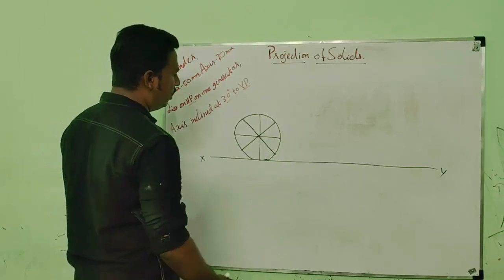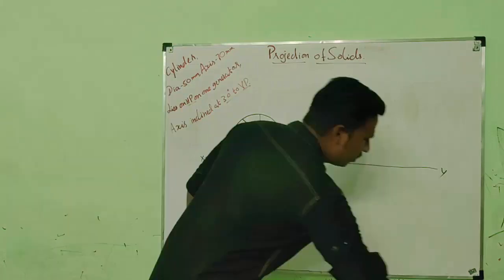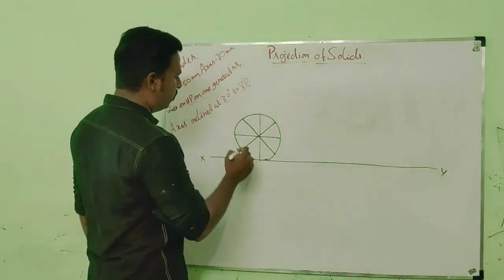And let us name all the points. Let us name the front face as A, B, C, D and rear face as 1234.